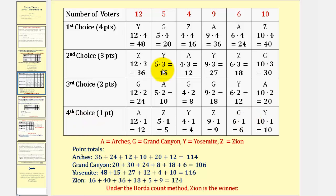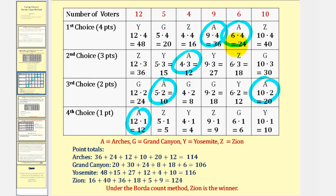You may want to pause the video to verify that the points were calculated correctly. Let's find the total for each choice. First, for the Arches, we'll look for all the A's. In the first row, we have an A here and here. The second row, we have an A here. The third row, we have an A here and here. And the fourth row, we have an A here. So A receives thirty-six plus twenty-four plus twelve plus ten plus twenty plus twelve points, or one hundred fourteen points.